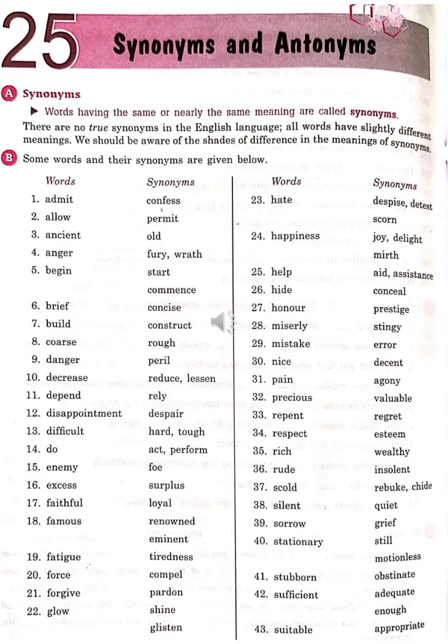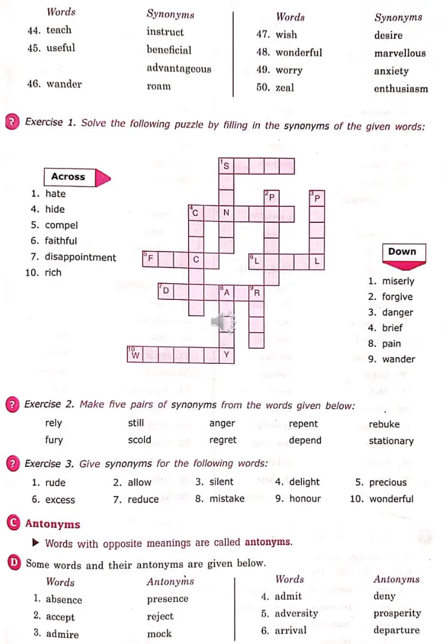Stubborn – Obstinate (Jiddi). Sufficient – Adequate, Enough (Paryapt). Suitable – Appropriate (Sahih). Teach – Instruct. Vendor – Roam (Ghumna). Wish – Desire (Iccha). Wonderful – Marvelous (Shandar). Worry – Anxiety (Chinta). Zeal – Enthusiasm (Josh).